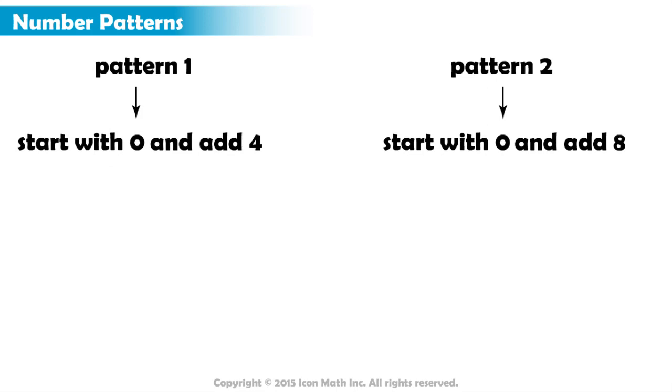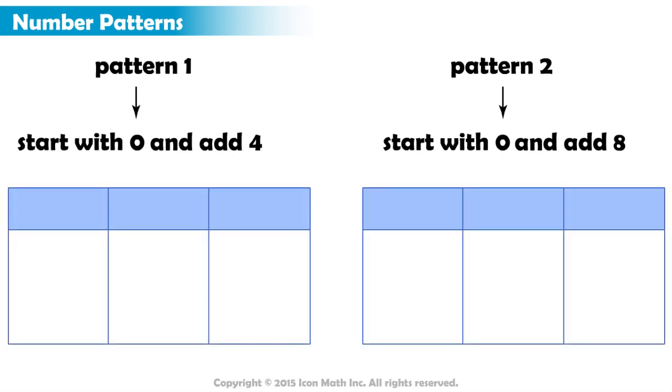For each pattern, we will draw a table with three columns to write current element, the expression representing the rule, and the result of applying the rule, which is the next element.